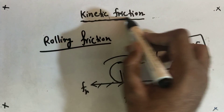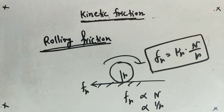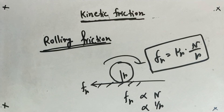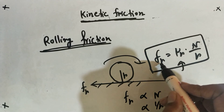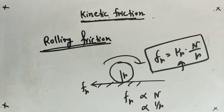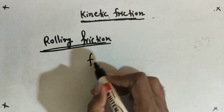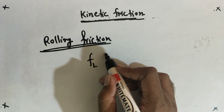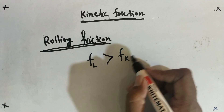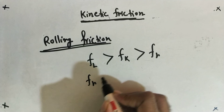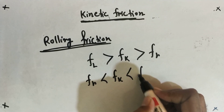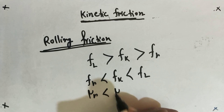Rolling friction can be placed within the category of kinetic friction, or treated as a separate type alongside static and kinetic friction. Rolling frictional force is also less than kinetic frictional force. Combining all three, we get: the limiting frictional force is greater than the kinetic frictional force, which is greater than the rolling frictional force — FR < FK < FL. Equivalently, μR < μK < μS.